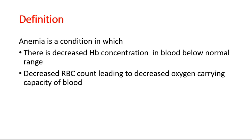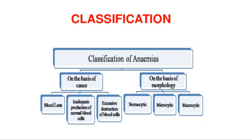Coming to definition first: anemia is a condition in which there is decreased hemoglobin concentration in blood below the normal range, and/or decreased RBC count, leading to decreased oxygen carrying capacity. It's not only decreased hemoglobin concentration — there are various conditions in which hemoglobin concentration is normal but there is decreased RBC count, ultimately leading to decreased oxygen carrying capacity.